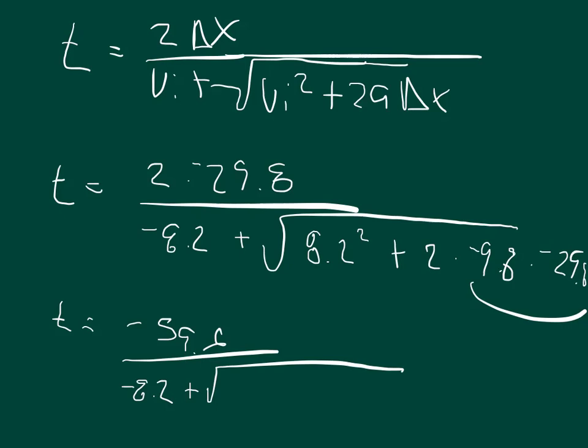67.24 plus 2 times negative 9.8 times negative 29.8 is positive 584.08.